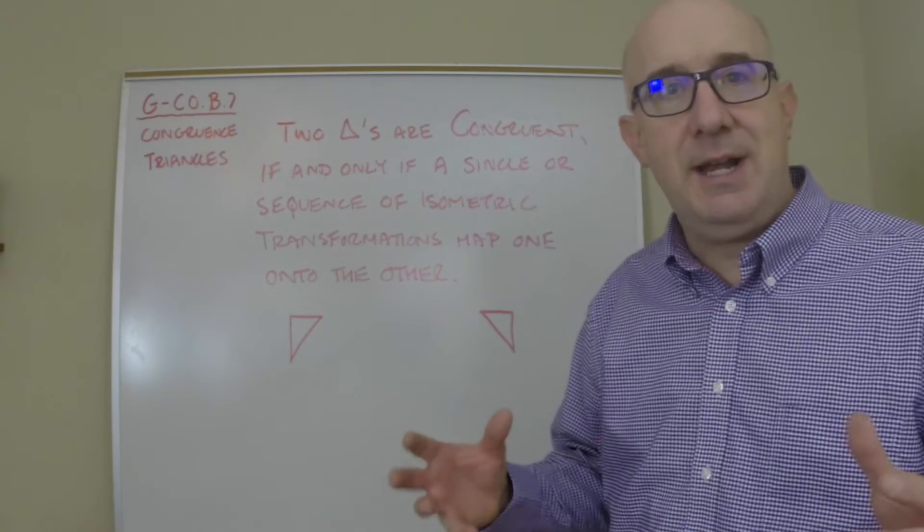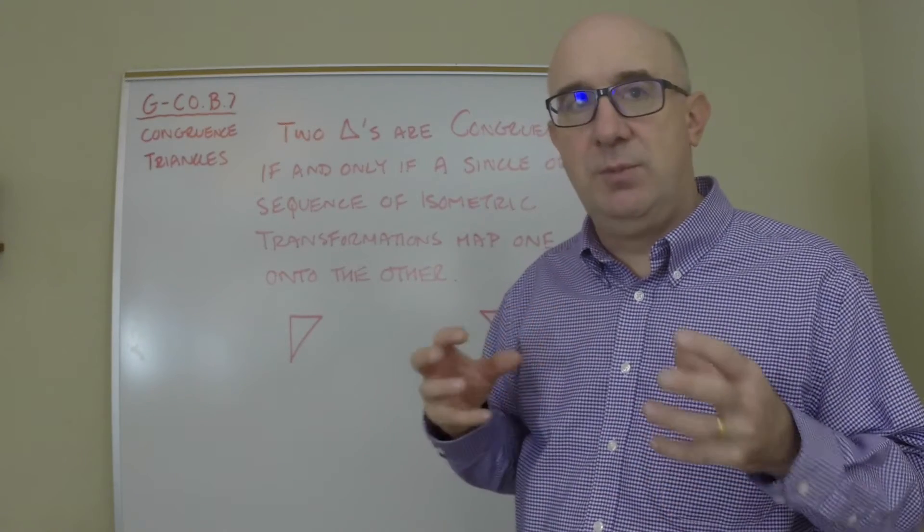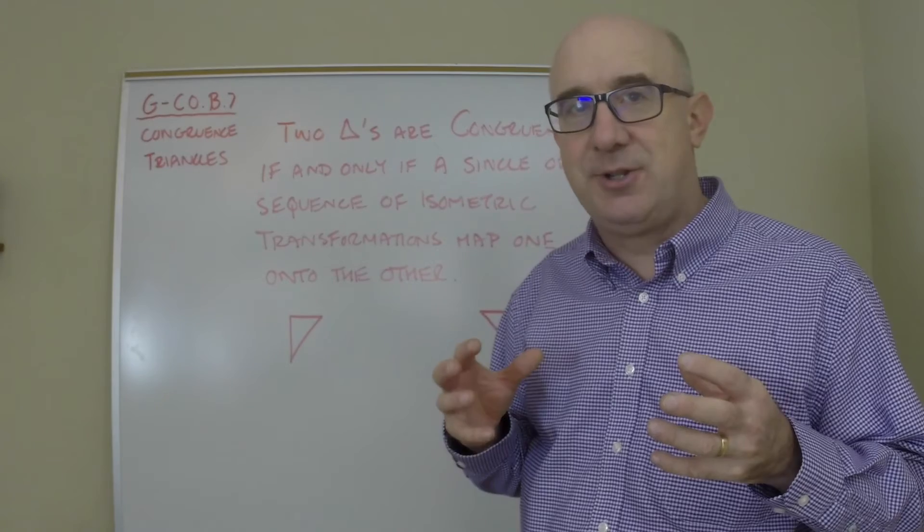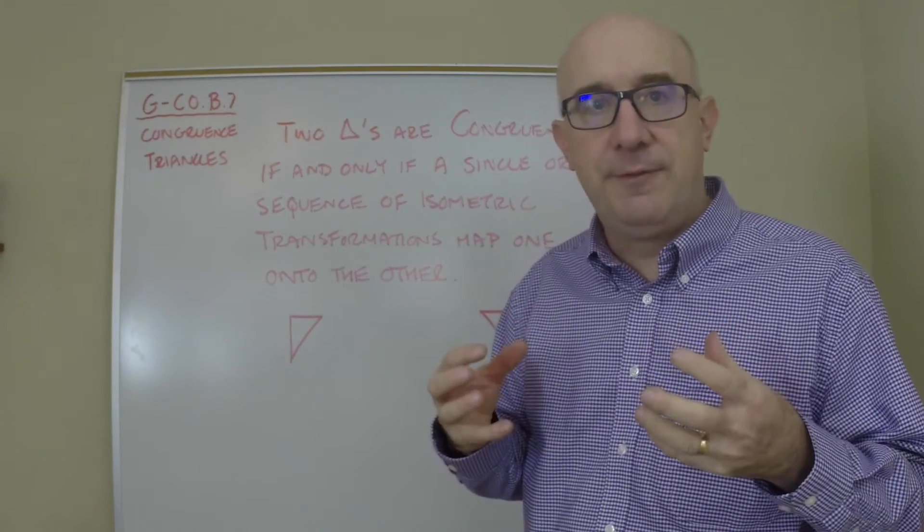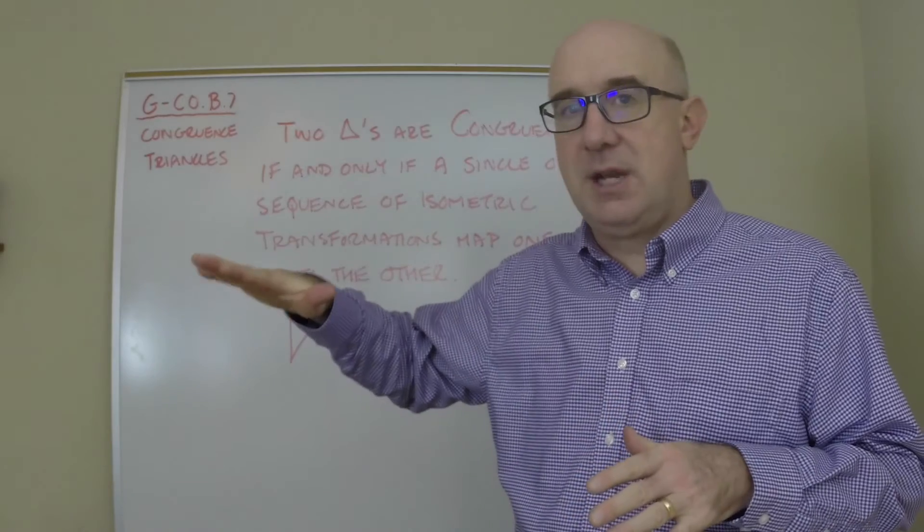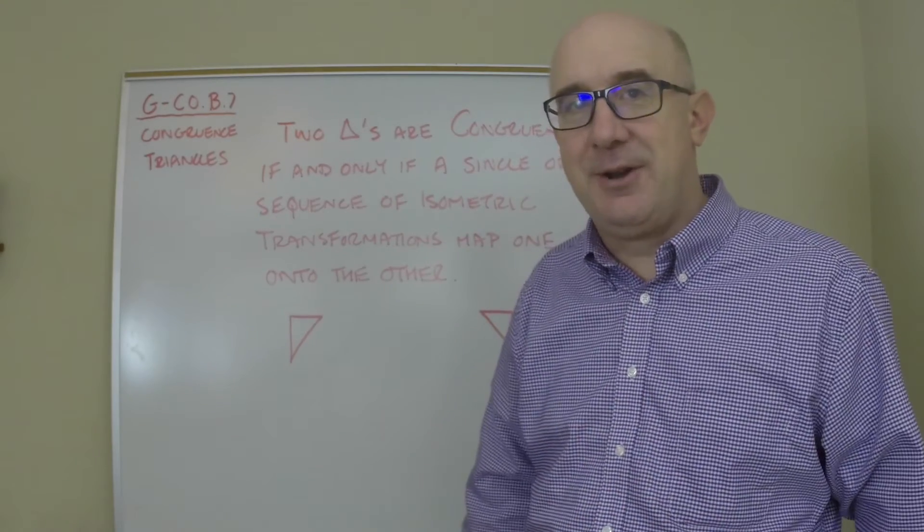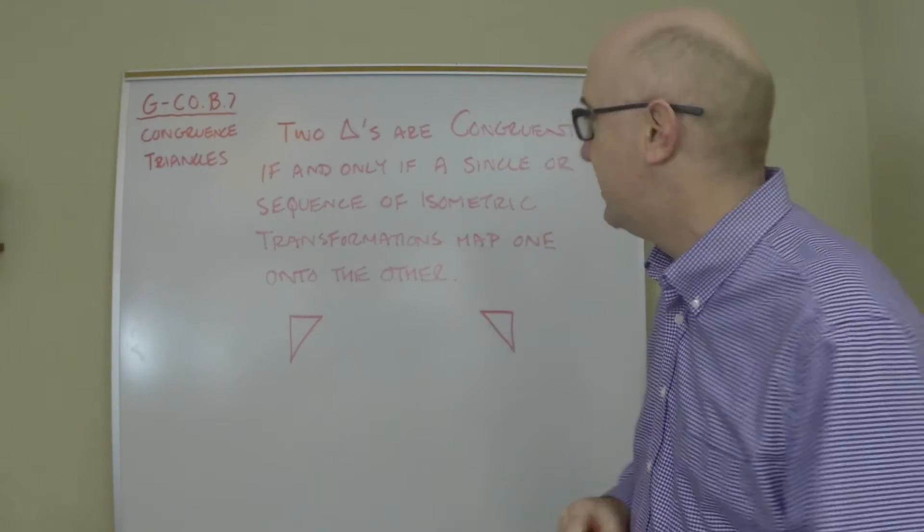So it's that idea again that we've learned that as we move these shapes, the isometric nature locks them into a rigid form, a congruent form. And all we have to do is take one and map it onto the other and we have congruence.